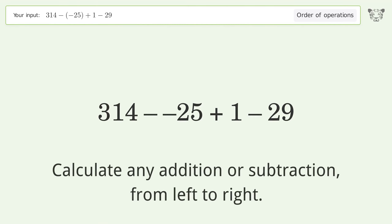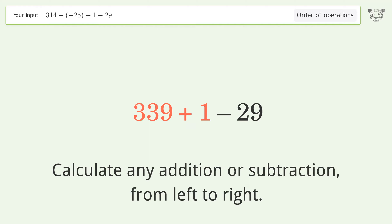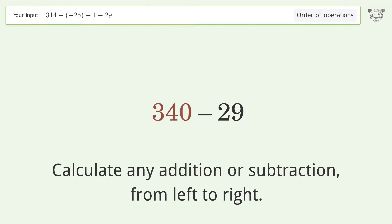You asked Tiger to calculate this. It deals with the order of operations, and the final result is 311. Let's solve it step by step. Simplify the expression, calculating any addition or subtraction from left to right. Minus and minus make a plus.